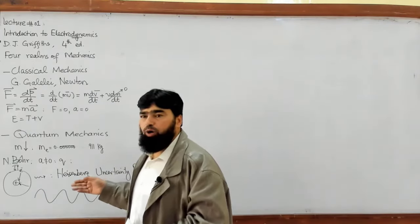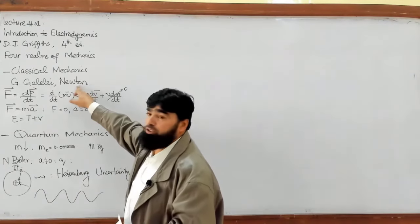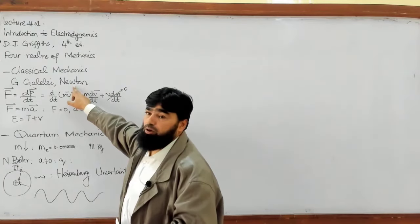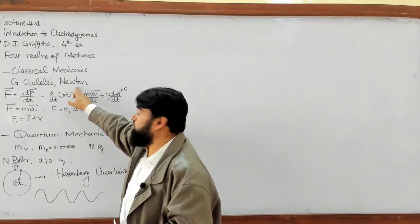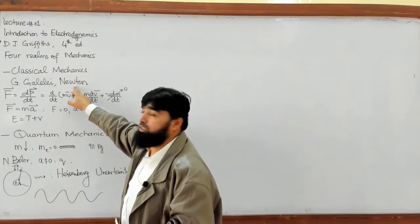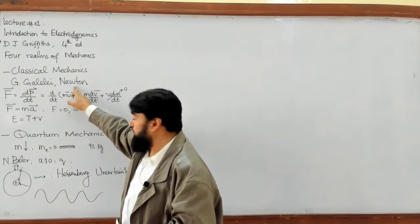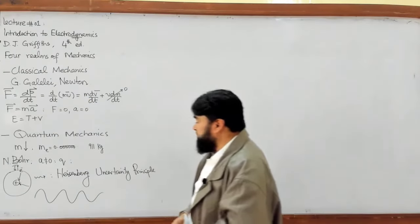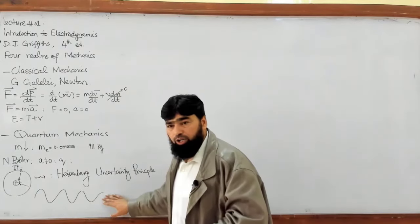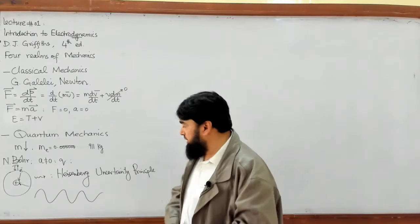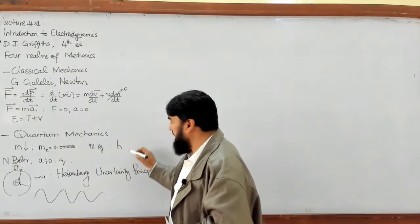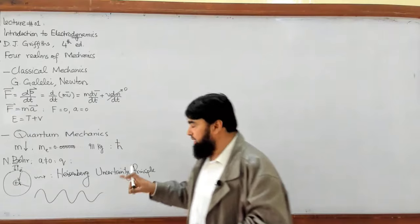Heisenberg considered electromagnetic waves, which are treated as continuous under the wave theory of light. Huygens held the wave theory of light, while Newton was against it — Newton held the particle theory and called the particles corpuscles.